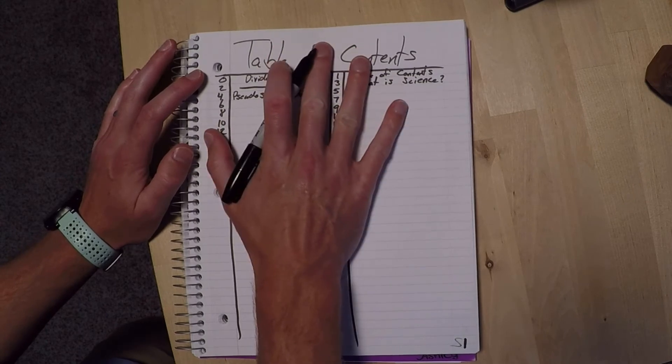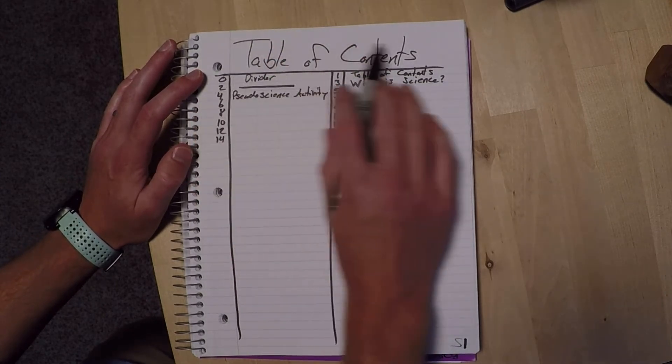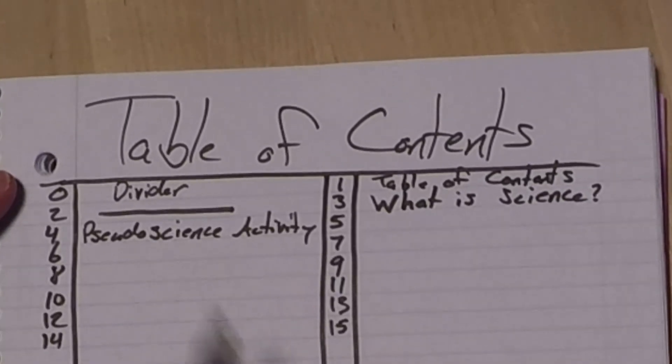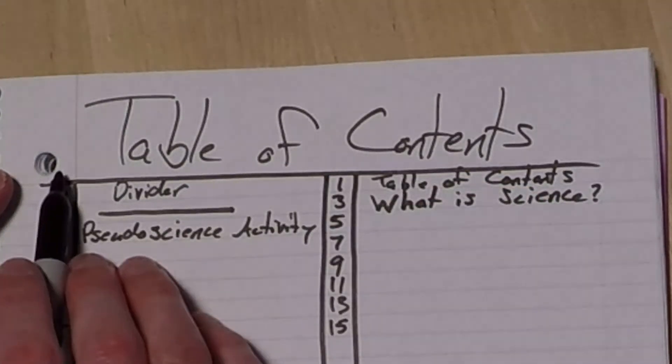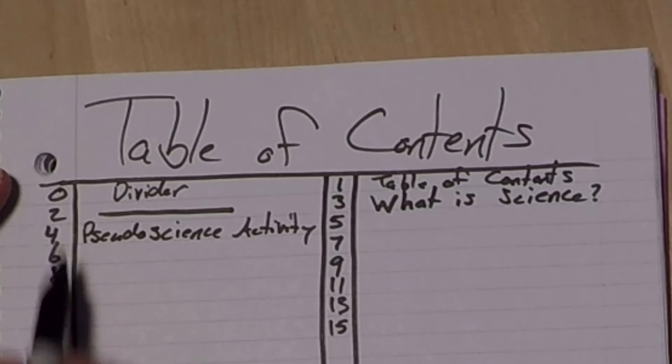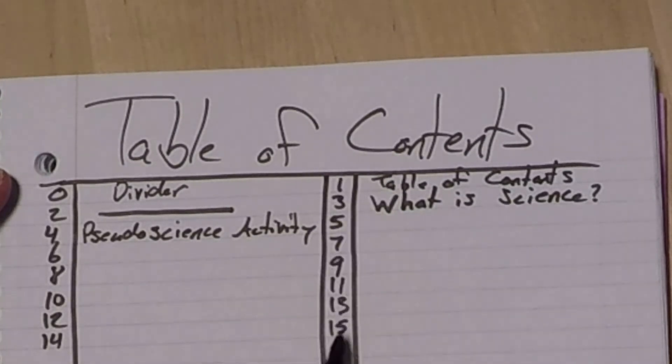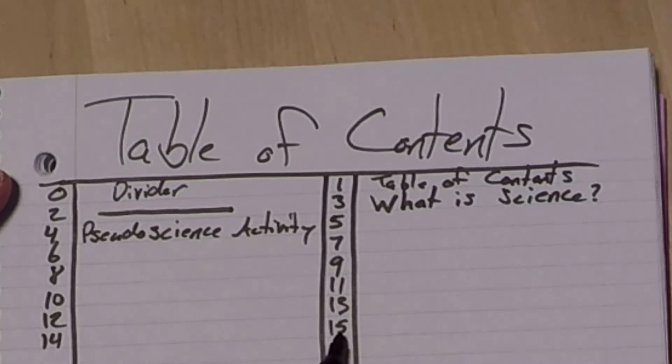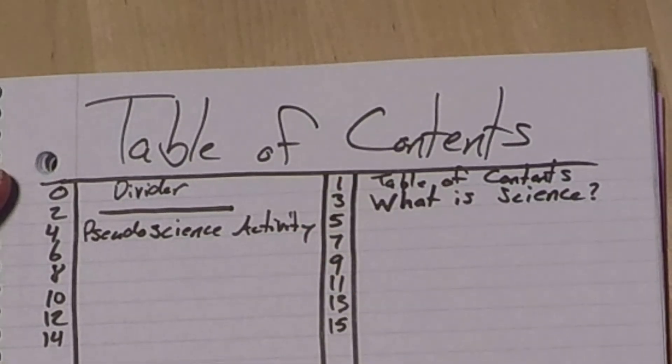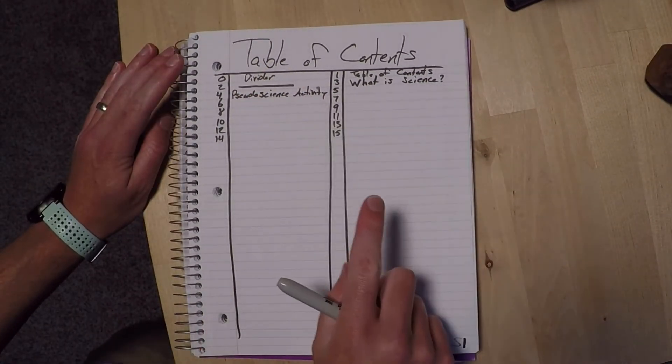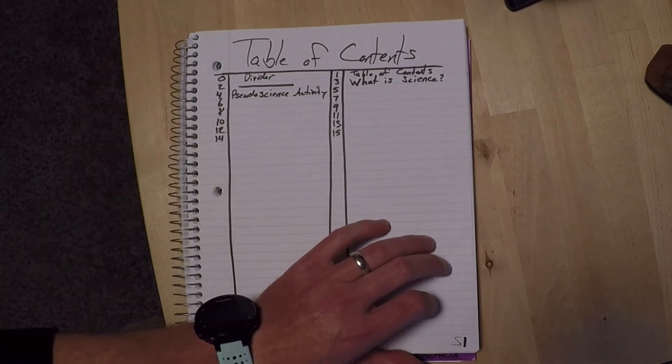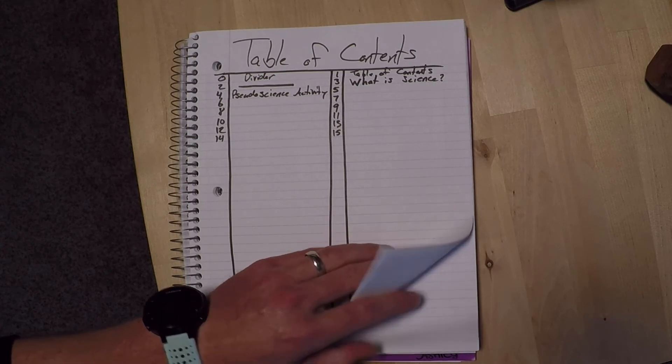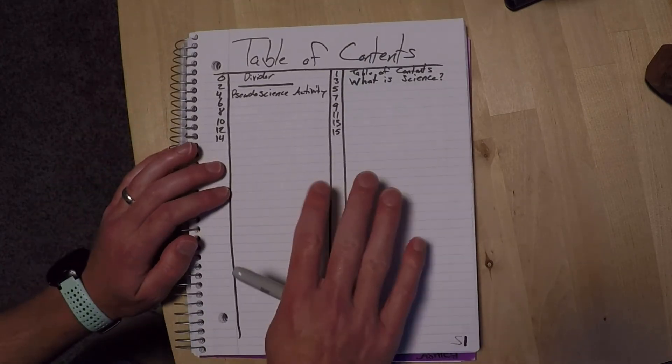So this is our table of contents. I would like you to basically do this exact same thing so that everyone's is the same. We have table of contents. We have evens on this side, on this side starting with zero, odds on this side starting with one, and you probably only have to go down to 15 for now. And we'll add to it as we go. Don't forget to number your pages, probably up to 15 on all of these, just to make it easy.